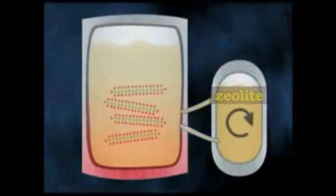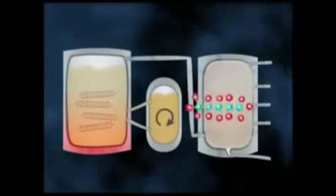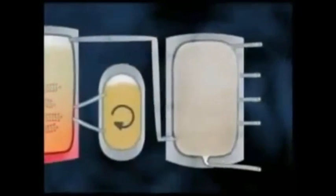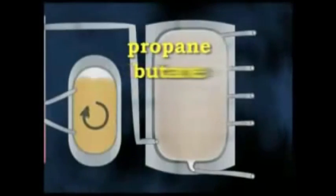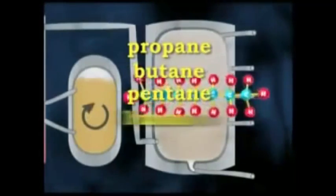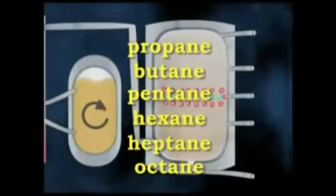Catalytic cracking is the major source of hydrocarbons with five to ten carbon atoms in the chain. The molecules most formed are the smaller alkanes used in petrol, such as propane, butane, pentane, hexane, heptane and octane, the components of liquid petroleum gas.